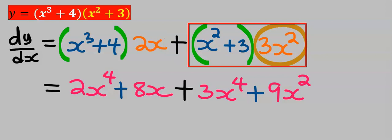Next, 3x to the power of 2 multiply x to the power of 2, you are going to get 3x to the power of 4.